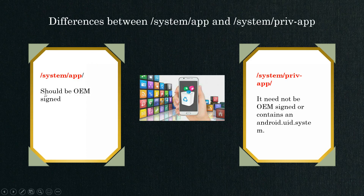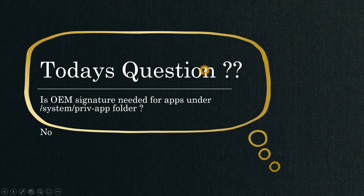One more key difference: whatever app you place inside system app must be OEM signed, whereas any app placed inside system priv-app does not need to be OEM signed. These are the major differences to be aware of when it comes to system app versus system priv-app. This was a simple session but it's very important to know these terminologies and understand when each is used and why.